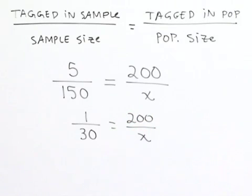We can now look at the cross product and multiply 1 times x to give us x equals 30 times 200.